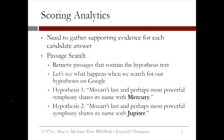Then Watson moves into more advanced scoring analytics. Watson needs to gather supporting evidence for each candidate answer. One way of doing this is through a method called passage search, where passages are retrieved that contain the hypothesis text. To simulate this, let's see what happens when we search for two of our hypotheses on Google. Our first hypothesis is 'Mozart's last and perhaps most powerful symphony shares its name with Jupiter.'